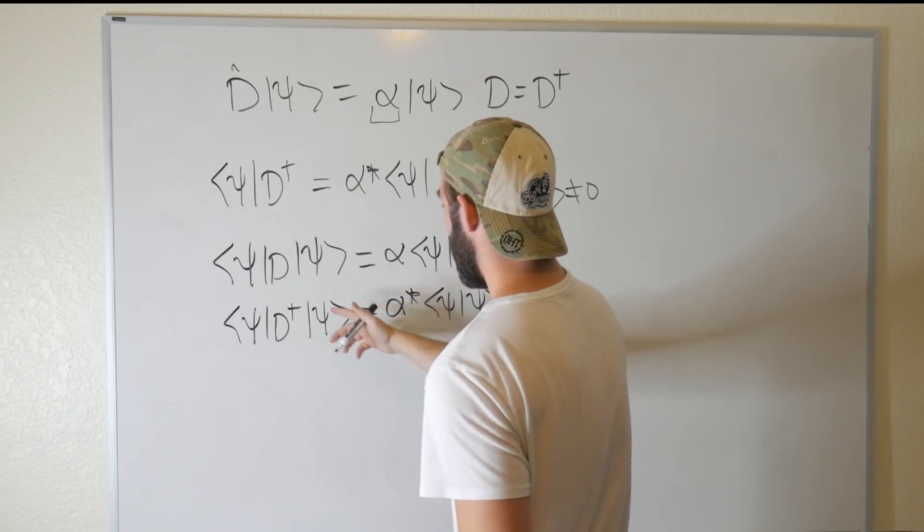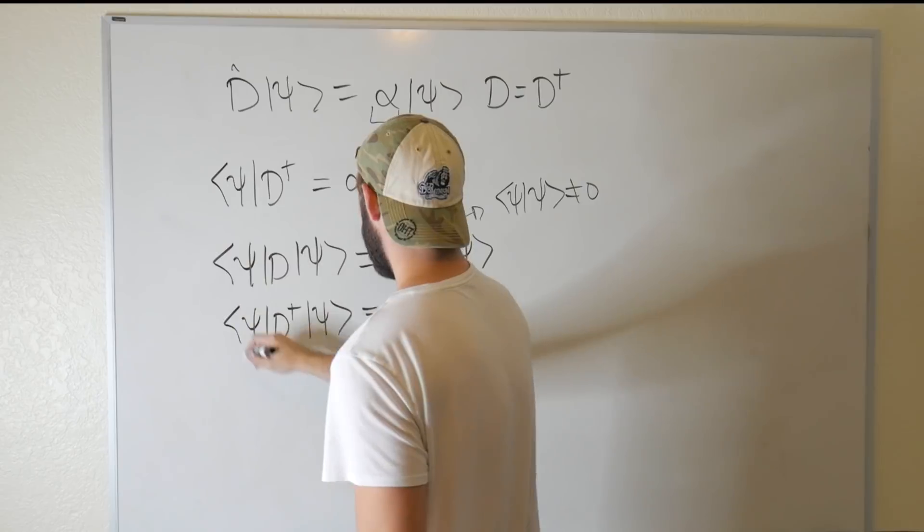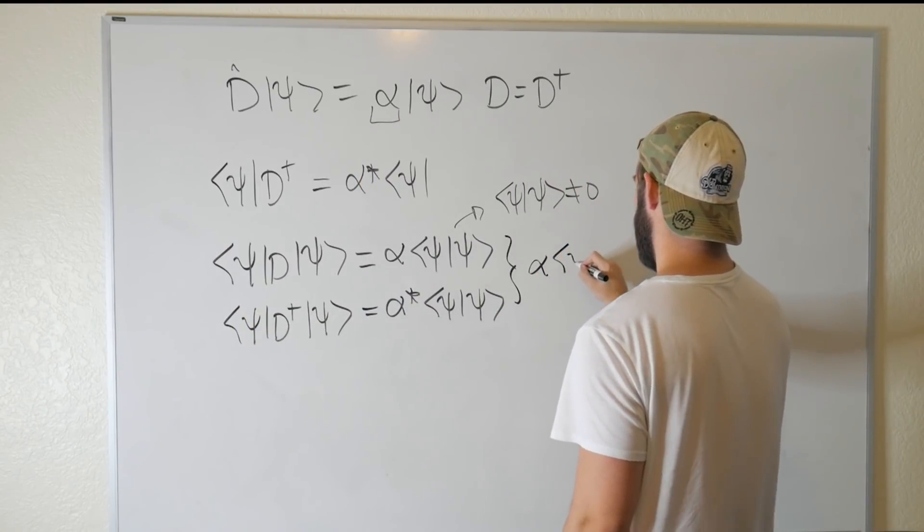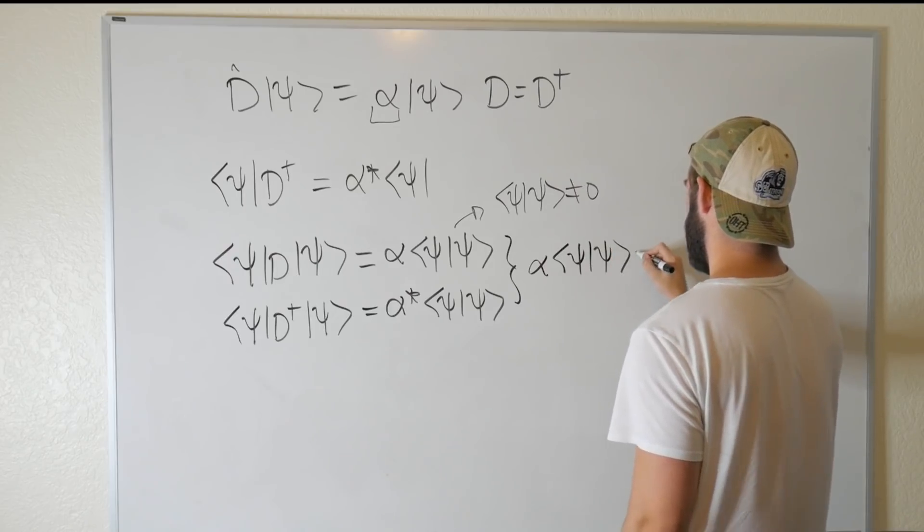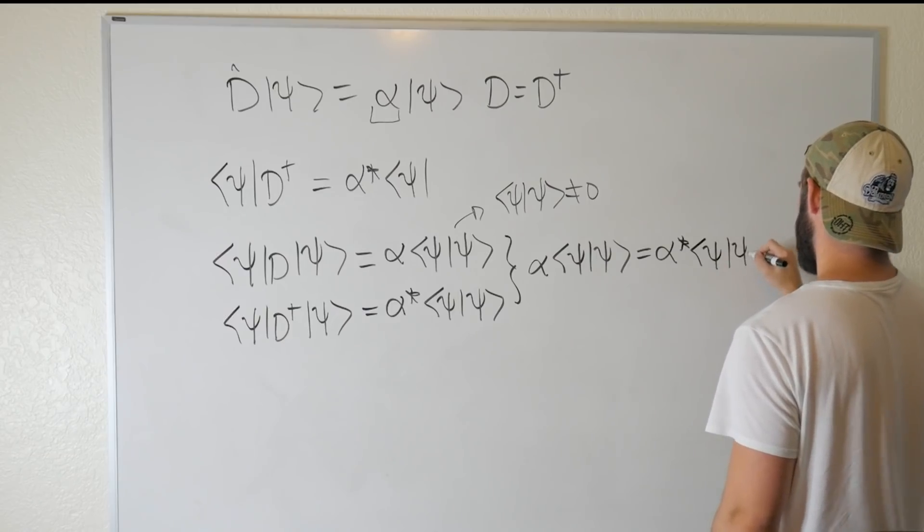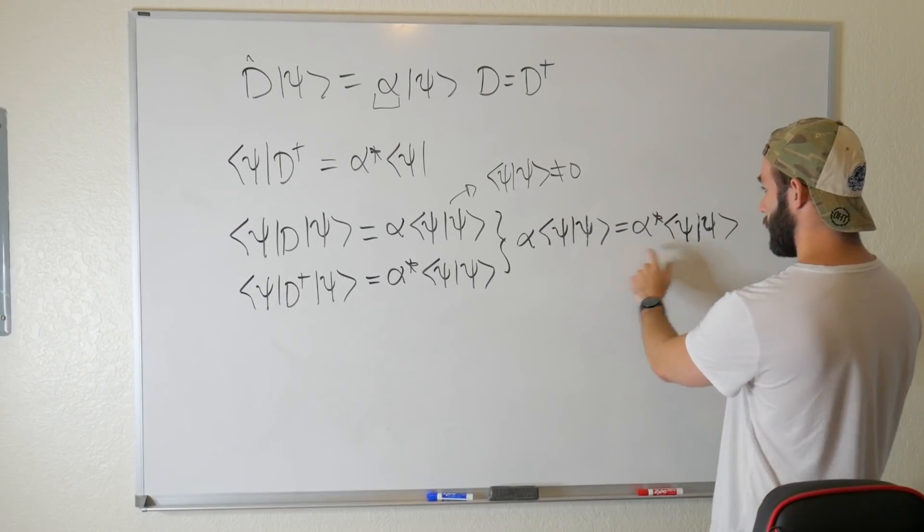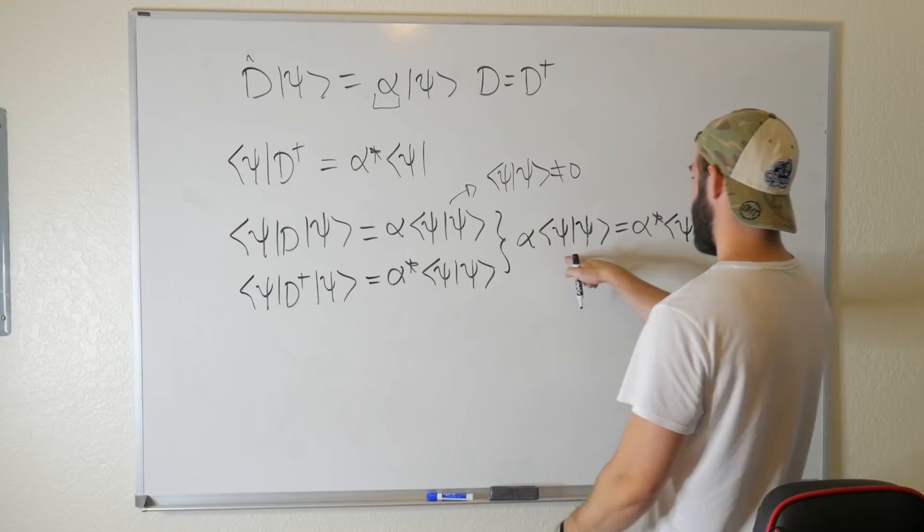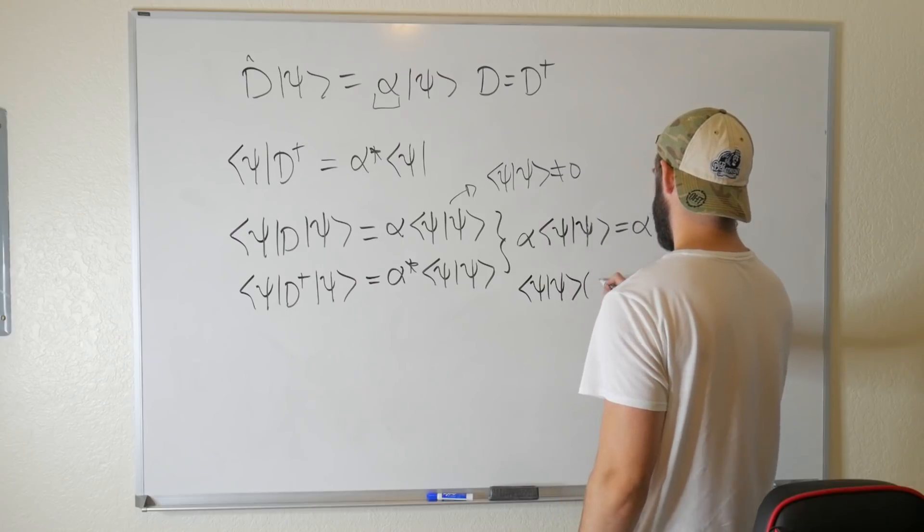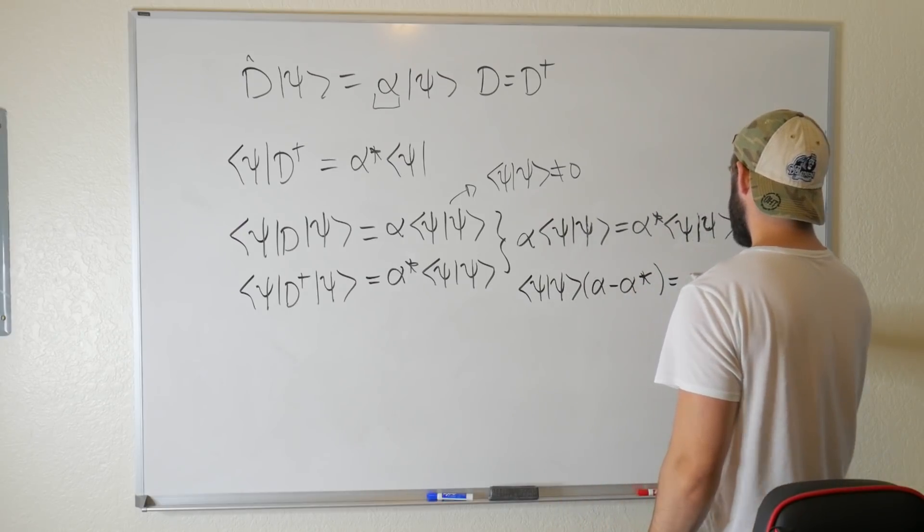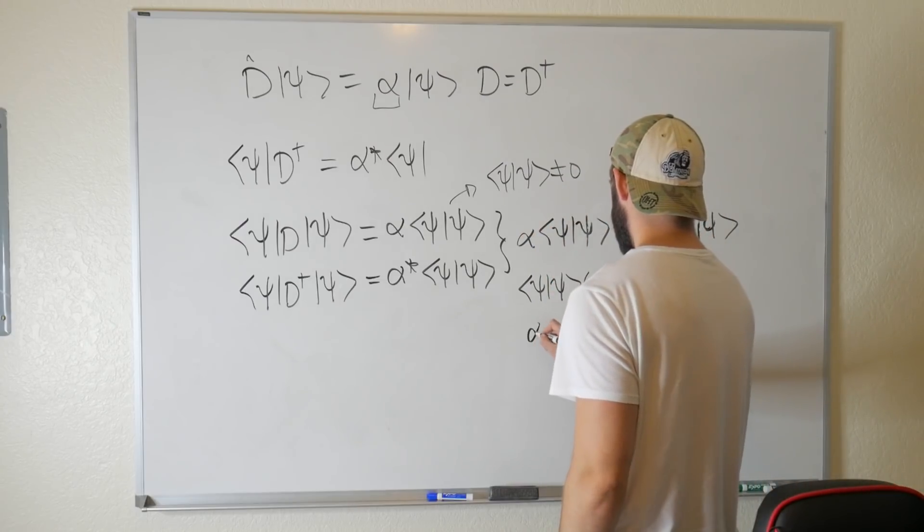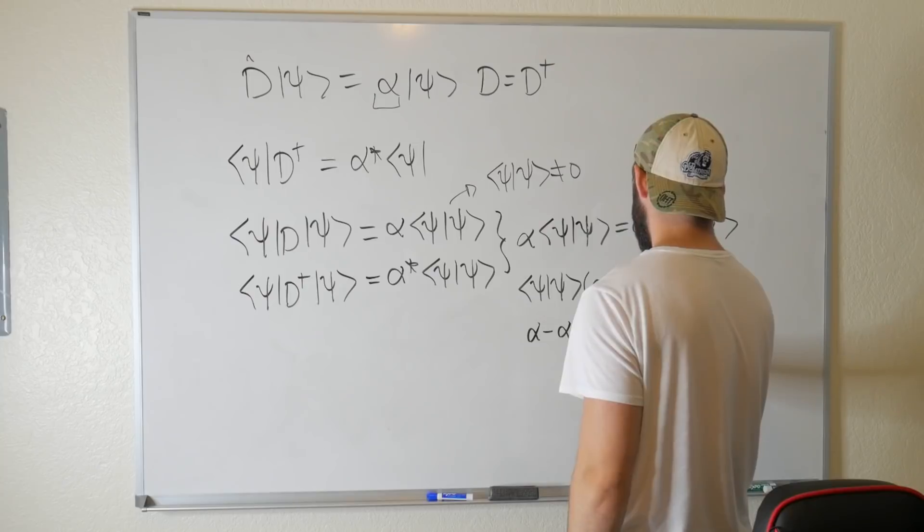So since D equals D†, that means that these two statements are equivalent, which means that we can equate the two. So we get that α⟨ψ|ψ⟩ is equal to α*⟨ψ|ψ⟩. Let's go ahead and subtract this side of the equation over and factor out our inner product here. And we get that ⟨ψ|ψ⟩ times (α - α*) is equal to zero. Now we already said that this is not equal to zero, which means that α - α* equals zero.